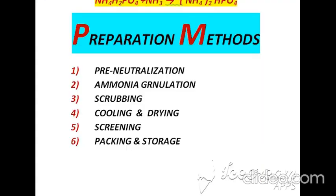According to the manufacturing steps, a total of six steps are involved to manufacture ammonium phosphate. The first is pre-neutralization, the second is ammonia granulation, the third is scrubbing, the fourth is cooling and drying, the fifth is screening, and the last is packing and storage.